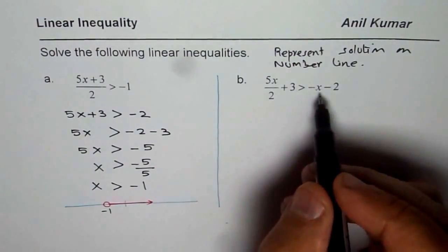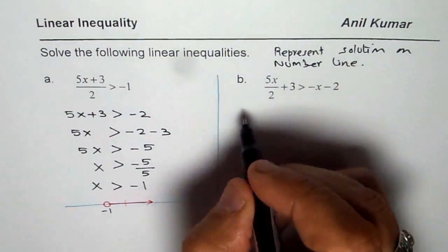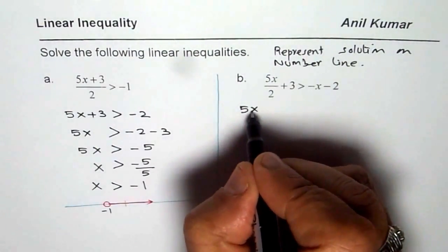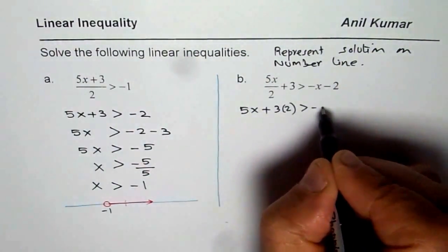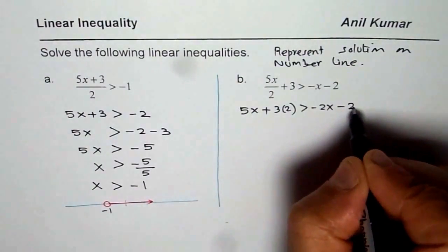Now let us solve the next one. So here again we will multiply by 2. So when you do that, you get 5x plus 3 times 2, greater than minus 2x, minus 2 times 2.